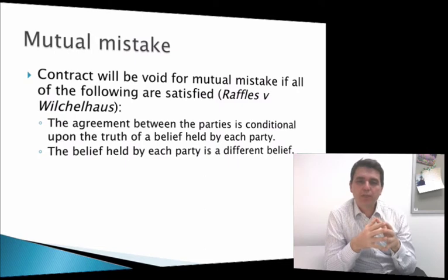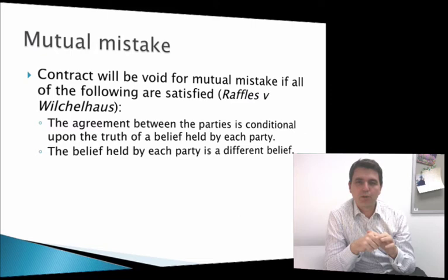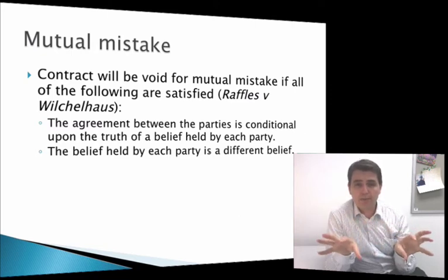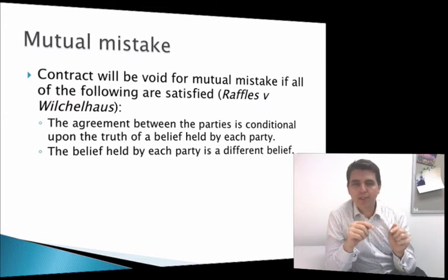For mutual mistake to be made out, there are two elements. The contract must be conditional upon the truth of a view held by each of the parties, and the belief held by each party must be a different belief.